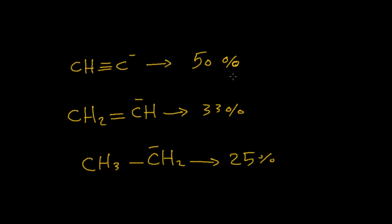As the s orbital character increases it will stabilize or will reduce this negative charge of the resulting conjugate base. So as the percentage of s orbital character increases, the more acidic the compound.